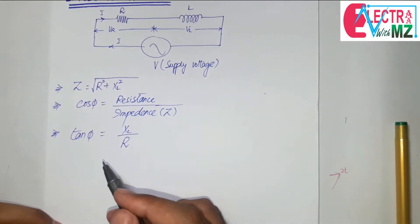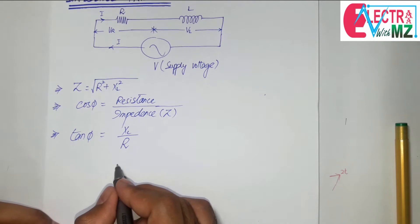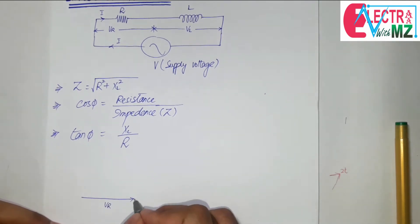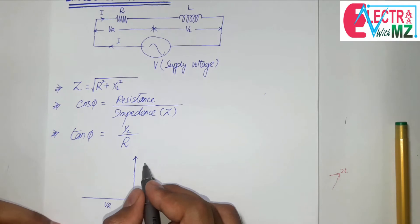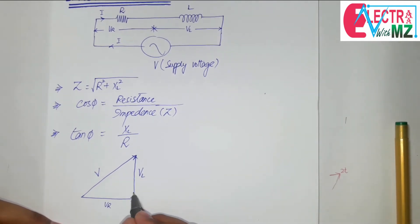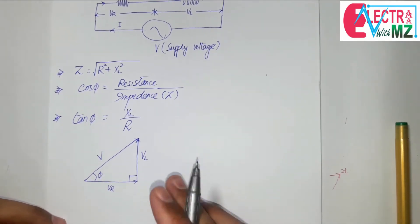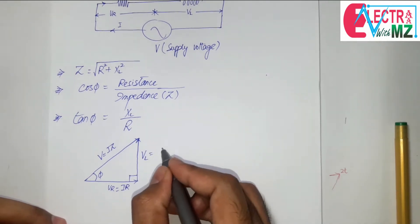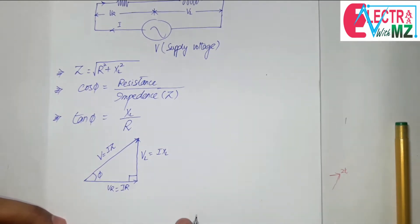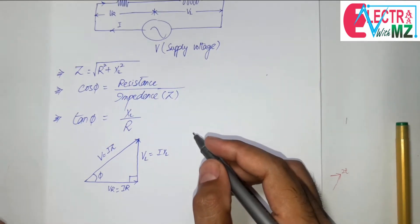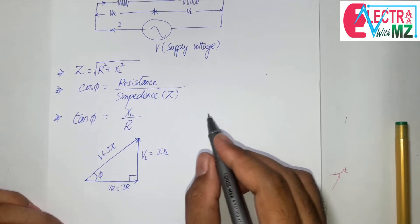As we know, in an RL series AC circuit the phasor diagram consists of VR on the horizontal axis, VL on the vertical axis, and V as the resultant, forming a right-angle triangle with phase angle phi. We also know that V = IZ, VR = IR, and VL = IXL. This is the phasor diagram for the RL series AC circuit. In order to find out the impedance triangle, we divide each and every side by I.